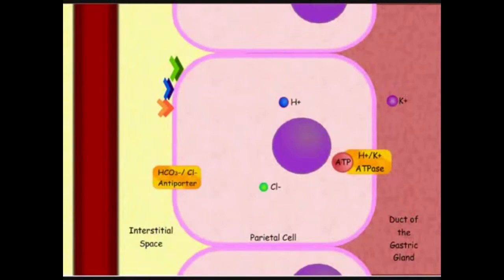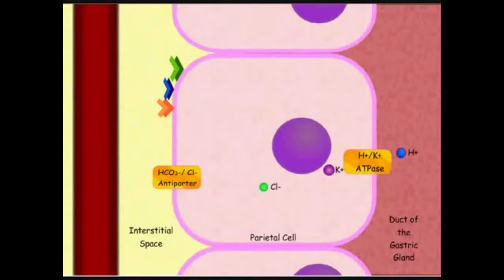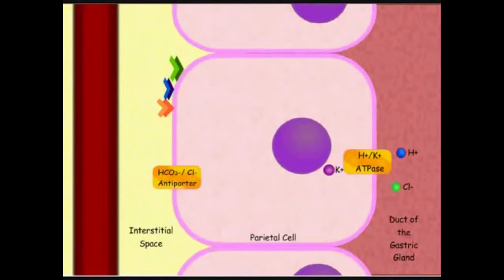ATP will bind to the hydrogen-potassium ATPase, where potassium ions are countertransported into the parietal cell in exchange for hydrogen ions. Chloride will simply diffuse through the cell membrane and enter the gastric gland. In the gastric gland, chloride ions combine with hydrogen ions to form hydrochloric acid, which is then secreted into the stomach.